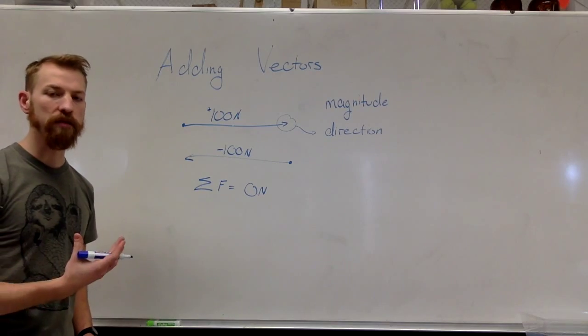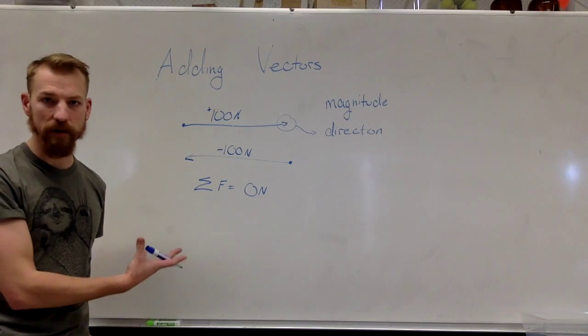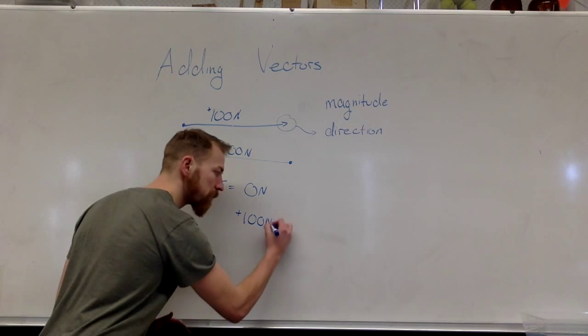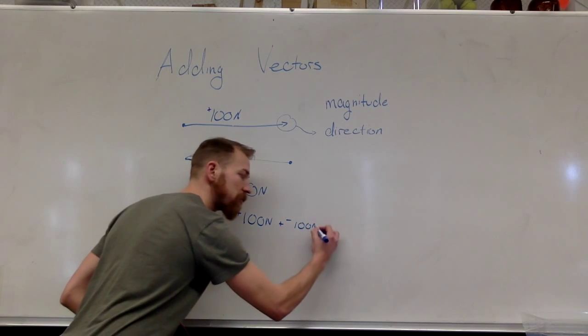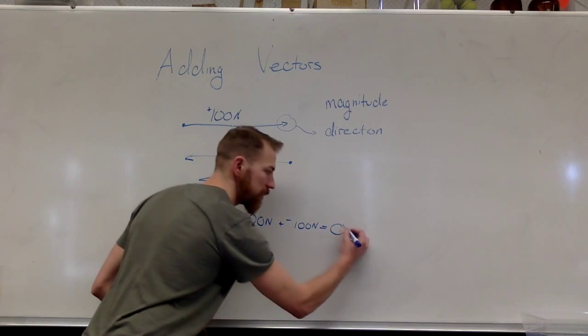our sum of our forces is going to be zero Newtons. And there are a couple of ways that we can add vectors. It's really pretty easy when the vectors are parallel, right? We just take 100 Newtons, positive 100 Newtons, and then add it to negative 100 Newtons, and the result is zero Newtons.